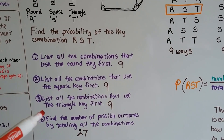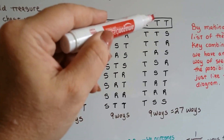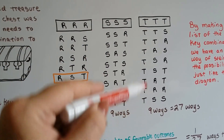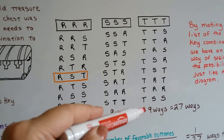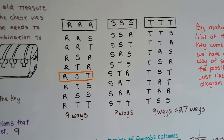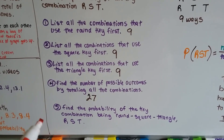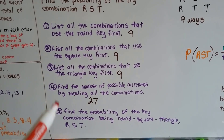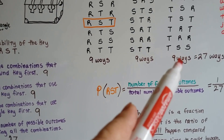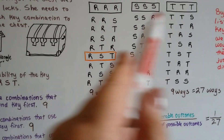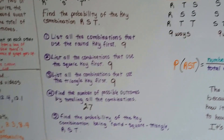Then we list all the combinations that use the triangle key first, and we find there are nine different ways to use the triangle key first. So we find the total number of possible outcomes by adding all combinations: nine plus nine plus nine is 27 different ways of using these keys in different combinations.